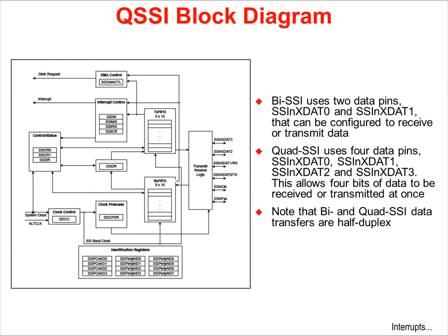BI SSI uses two data pins that can be configured to transmit or receive data. Quad SSI uses four data pins, which allows four bits of data to be transmitted or received at the same time. Note that the BI and Quad SSI data transfers are half duplex.